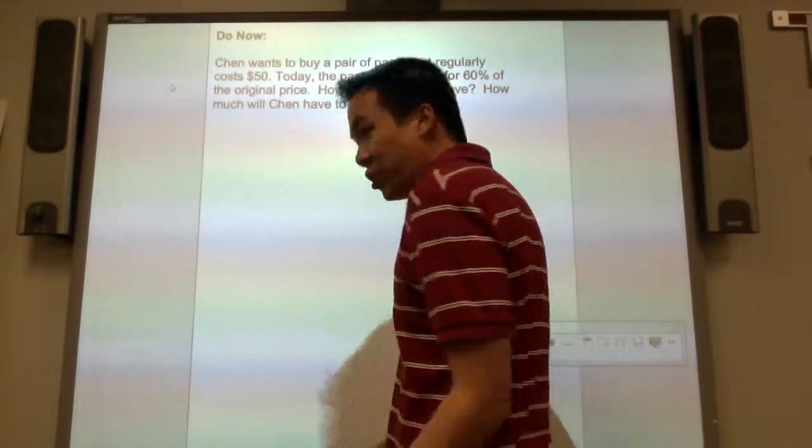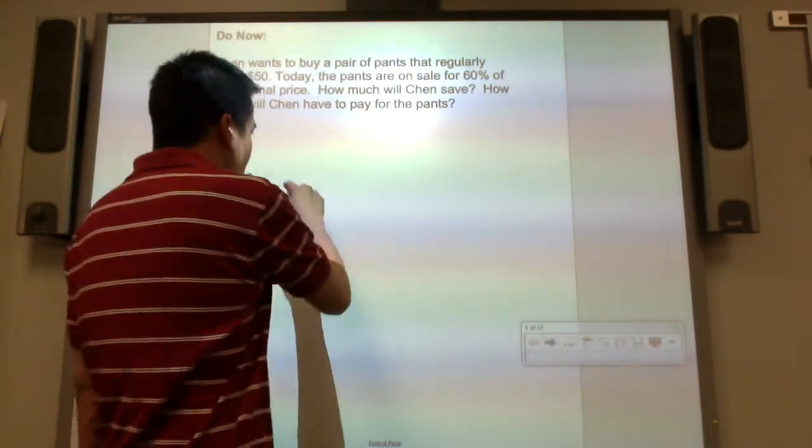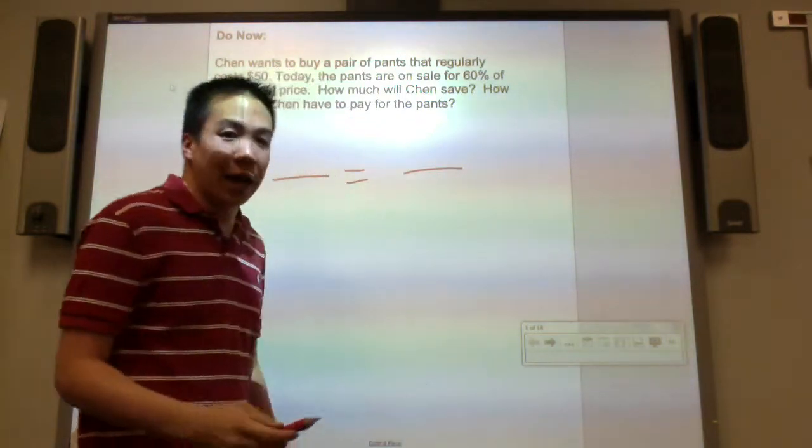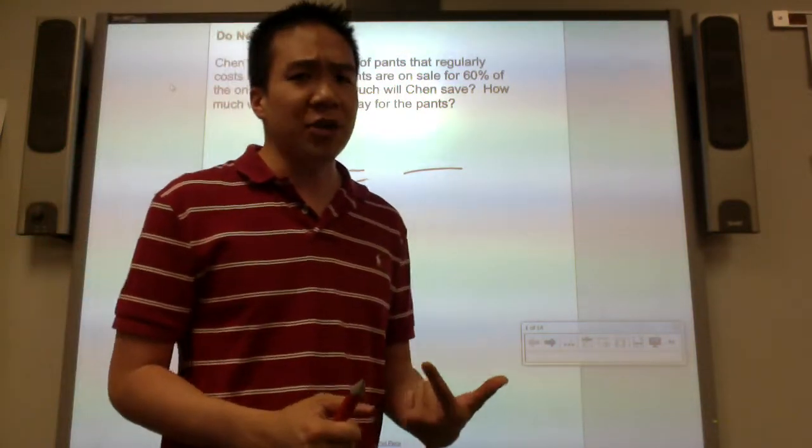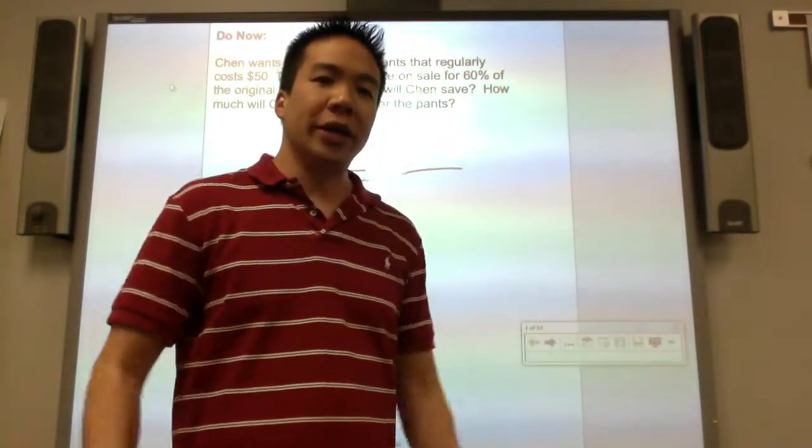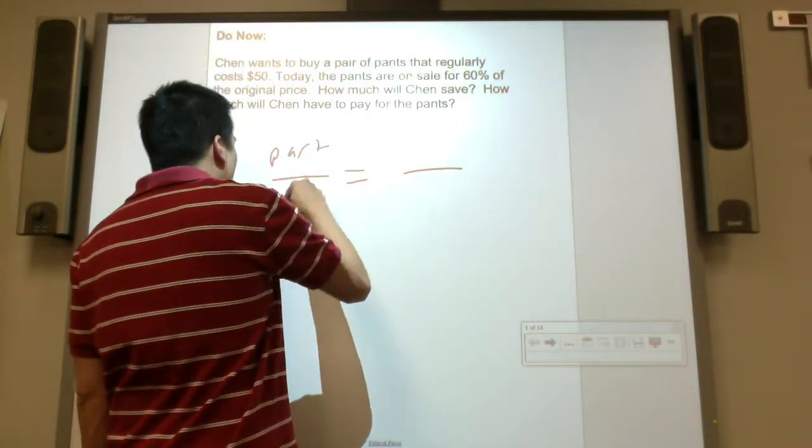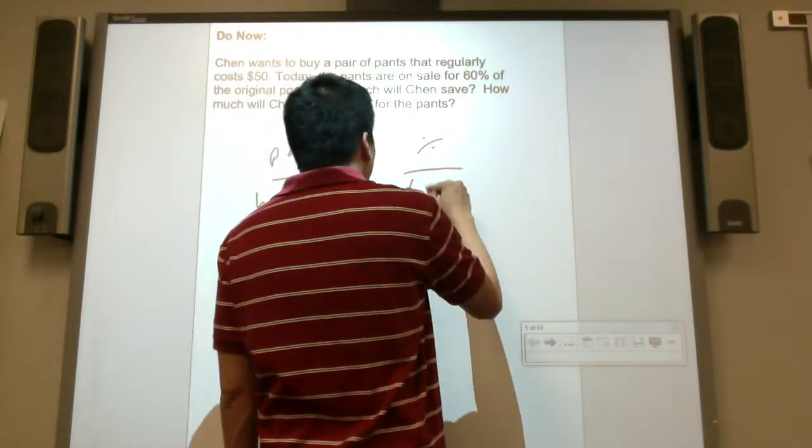You can either draw a picture if that's what you feel like doing, a percent bar picture, or you can use the percent proportion. Since last time we practiced the percent proportion, let's practice that one. What is percent proportion? It's part to whole equals percent per 100.